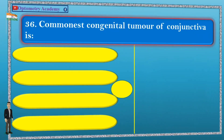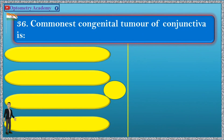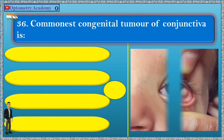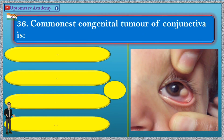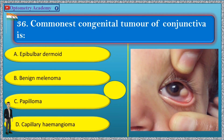Question 36. Commonest congenital tumor of conjunctiva is: A. Epibulbar dermoid, B. Benign melanoma, C. Papilloma, D. Capillary hemangioma.